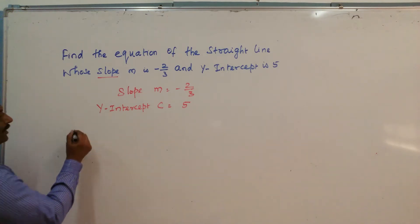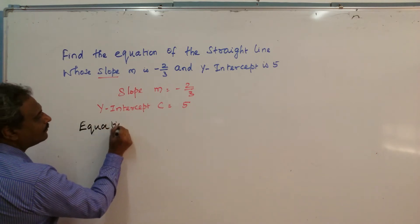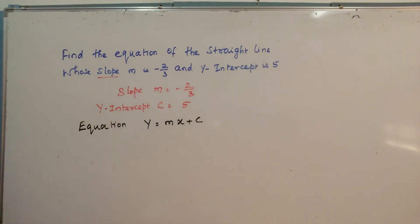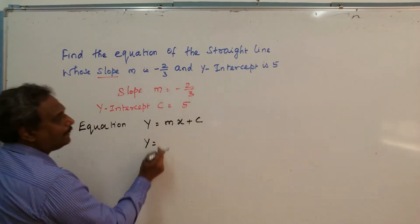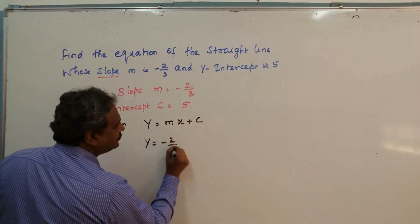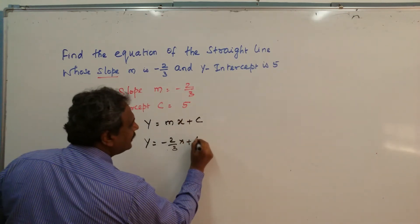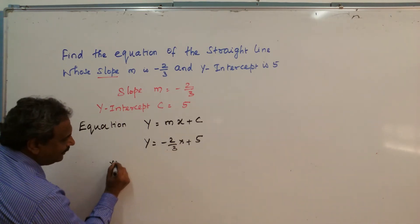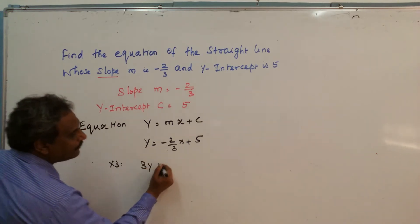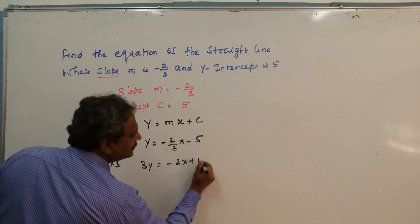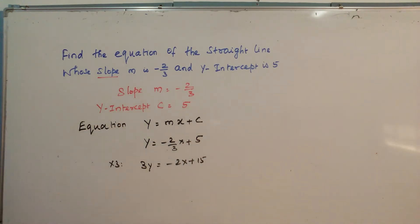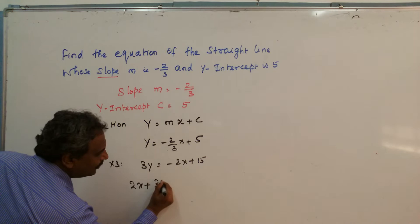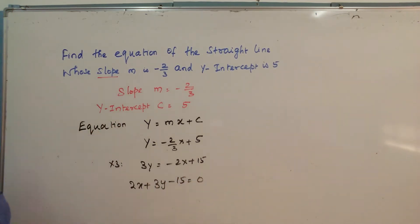Our equation will be of the form y equal mx plus c. So this is y equal — in place of m I am going to take minus 2 by 3, this is x, and in place of c I am going to take 5. Here I am having 3, so I am going to multiply by 3. This will become 3y equal minus 2x plus 15. I am going to take all the values to one side, so this will become 2x plus 3y minus 15 equal 0.